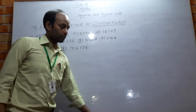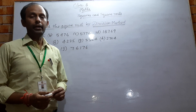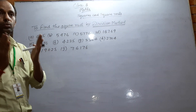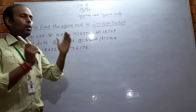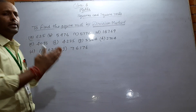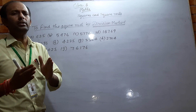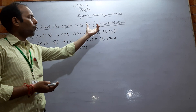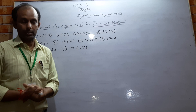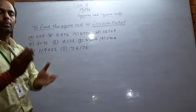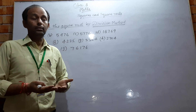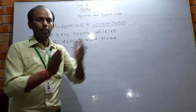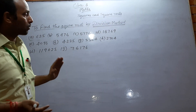Hello friends, how are you? I hope and I wish to God you all are fine. In the previous video I talked about how you can find the square root by prime factorization method, how to find squares of any number, how to find Pythagorean triplets, and how to find the unit digit of any square. Today I will teach you how to find the square root by the division method.